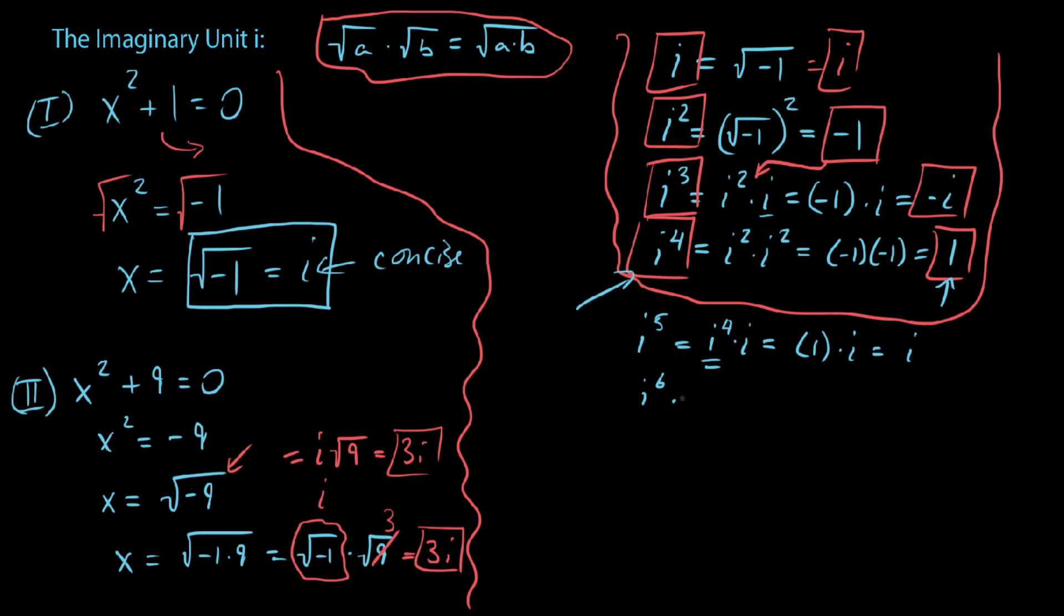I just want you to see this pattern. i to the sixth, that would be like a group of four i's times i squared. What do we know about i to the fourth? Well, we know that's 1. We know i squared, that's the same thing as negative 1. So we end up with 1 times negative 1 is negative 1. So let me basically designate these here.